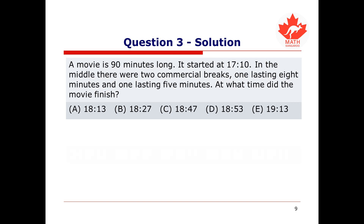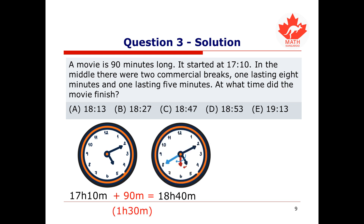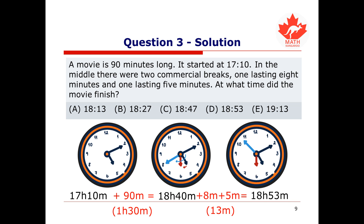Let's walk through the problem. We can visualize this while we add the times. First, let's visualize the starting time of the movie. Remember, 17:10 looks like 5:10 on an analog clock. If we add 90 minutes — the duration of the movie — we move the hours by 1 and the minutes by 30, since 90 minutes equals 1 hour and 30 minutes. Finally, we add the break times, which is 13 minutes in total. We end at 18:53, which is option D.